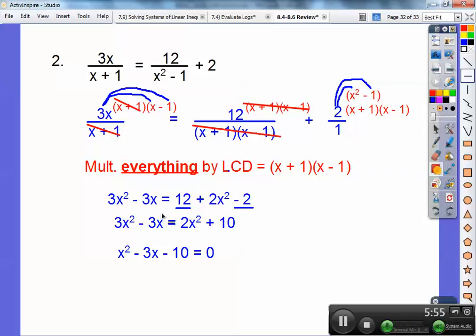Remember, 3x squared minus 2x squared gave me 1x squared, and then minus 3x, and then I subtract off that 10. Now it equals 0. Factors of negative 10 that add to negative 3 are negative 5 times a positive 2. So I get x equals negative 2 or 5.